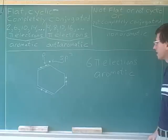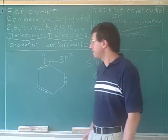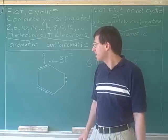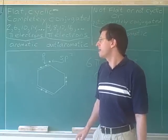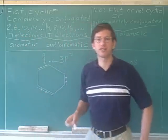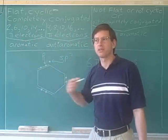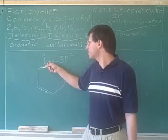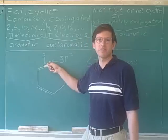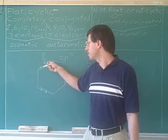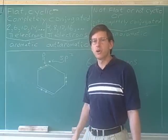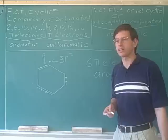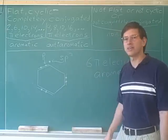Six pi electrons, which puts us in the Hückel list — the compound is aromatic. Remember that the puzzle was: how can a radical possibly be aromatic? We knew that in order to be aromatic you have to have an even number of pi electrons, and it seemed like there's no way a radical could have an even number. But there is a way, because the unpaired electron does not have to be a pi electron. Since we have an even number of pi electrons, this molecule is aromatic.